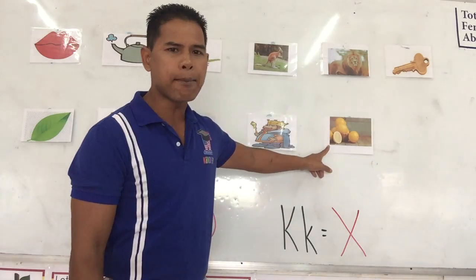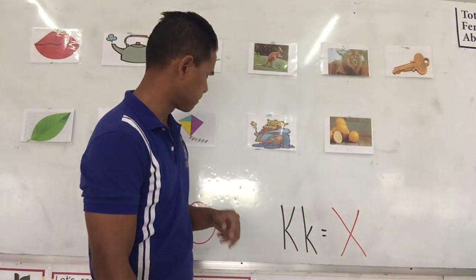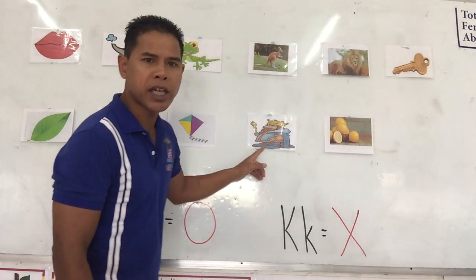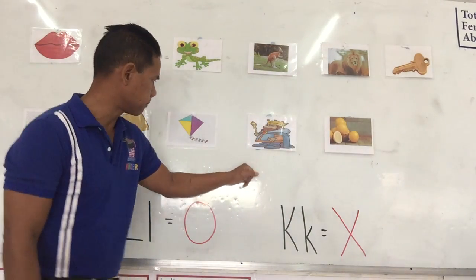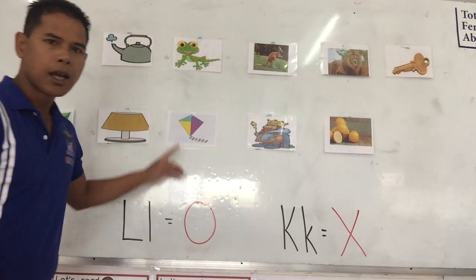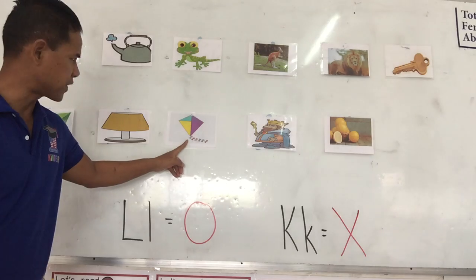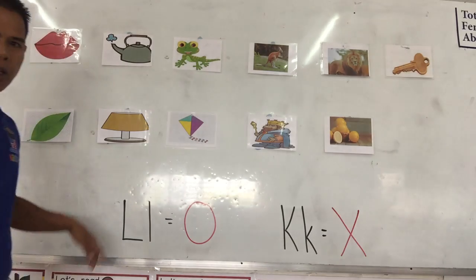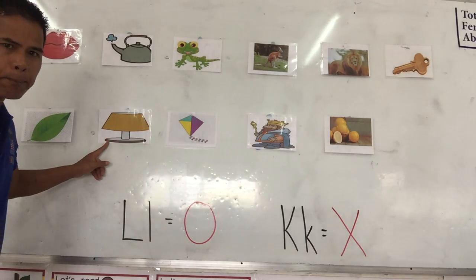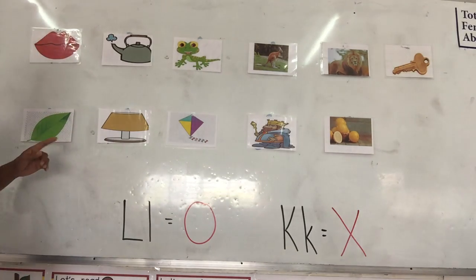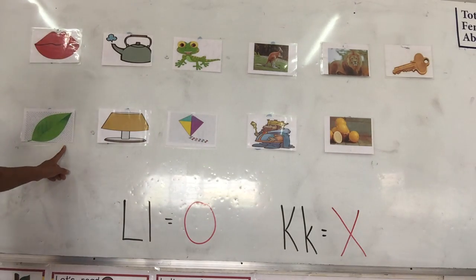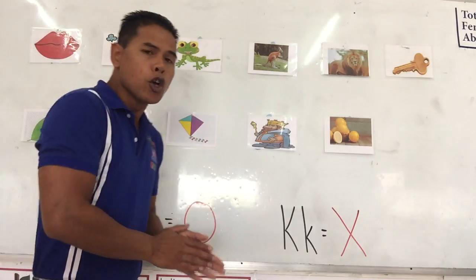Also lion, king, lemon, kite, lamp, and leaf.